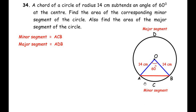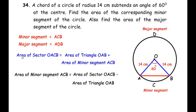The minor segment is ACB and the major segment is ADB. To begin, let us consider the area of sector OACB. The area of sector OACB is made up of the area of triangle OAB plus the area of minor segment ACB. Since we need the area of the minor segment, we rearrange to get: area of minor segment ACB = area of sector OACB minus area of triangle OAB.